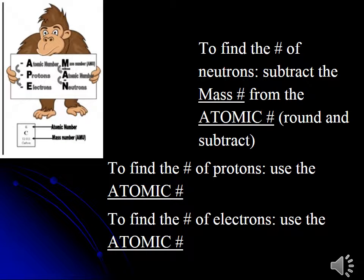To find the number of neutrons, subtract the mass number from the atomic number — round first and then subtract. To find the number of protons, use the atomic number. To find the number of electrons, also use the atomic number.